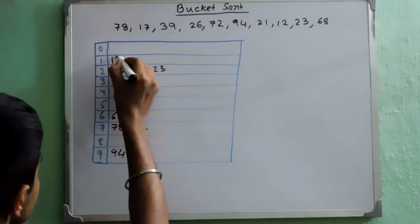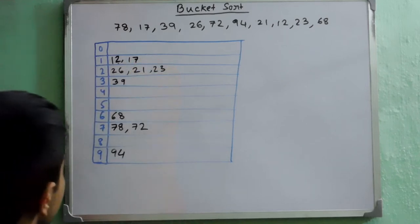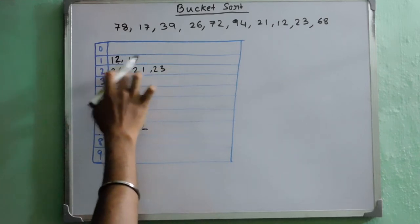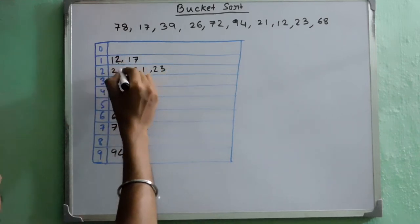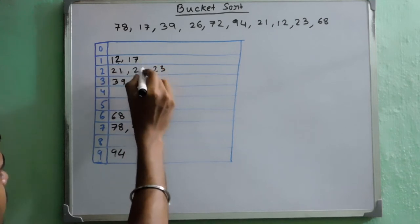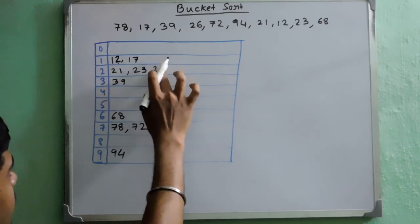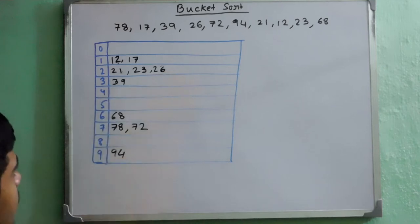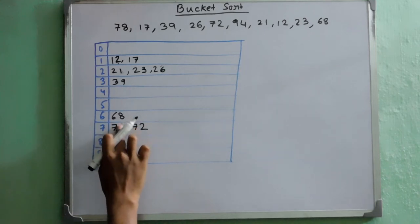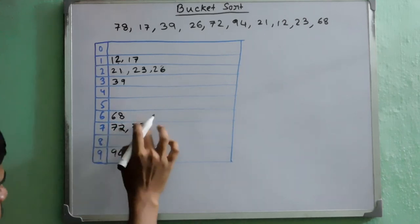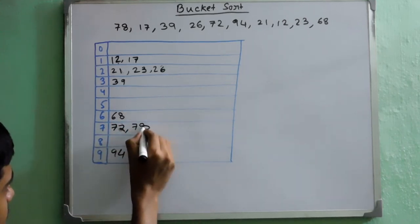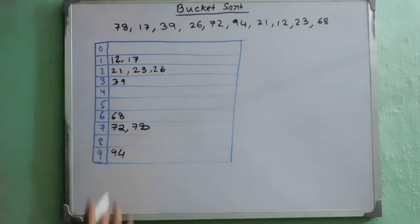What we will get is we will get 12 and then 17. Similarly, we will do the same here. So we will get first 21, then 23 and then 26. This has only one element, so no need of sorting. Here again we have two elements, so 72 first, 78 then. Also here we have one element, so no sorting required.